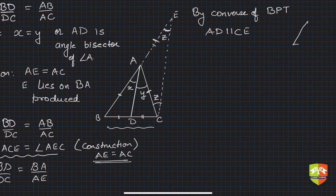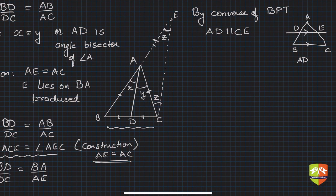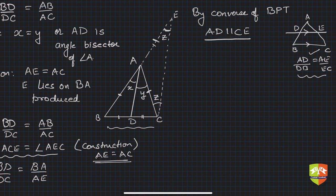Recall that in BPT, if a line cuts two sides of a triangle proportionally, the lines are parallel. The converse is also true: if the ratio holds, then the line is parallel. So equivalently here, AD is parallel to CE, because the ratios were the same.